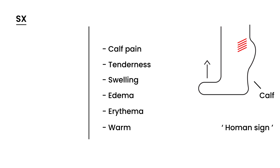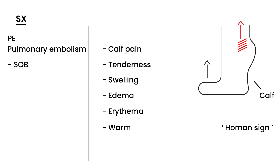If the blood clot does travel all the way up to the lung and you get a pulmonary embolism, then you will have additional symptoms no longer limited to the calf. Those symptoms include shortness of breath and pleuritic chest pain — chest pain when the patient takes a deep breath. If a person has that, they are in big trouble and need immediate treatment.